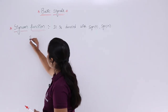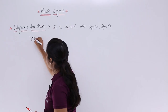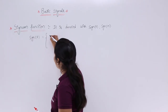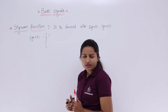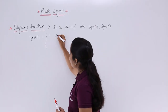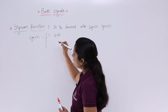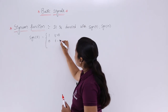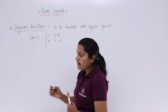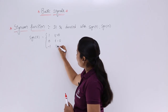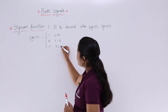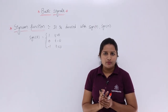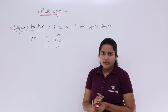The definition of the signum function sgn(t) is: this function is equal to 1 when t is greater than 0, equal to 0 when t is equal to 0, and equal to minus 1 when t is less than 0. This is the definition of the signum function in the continuous time domain.